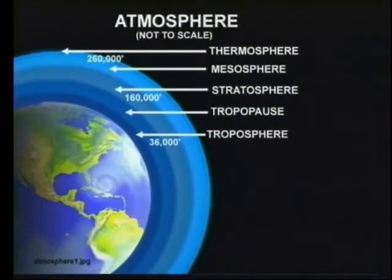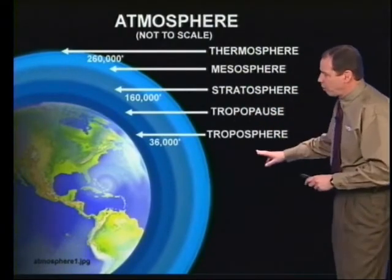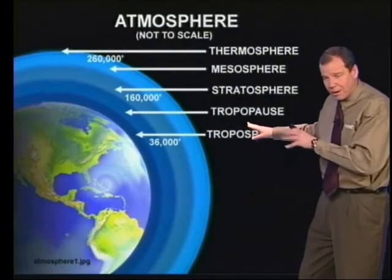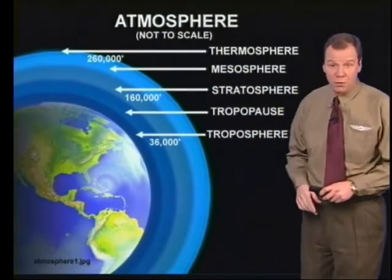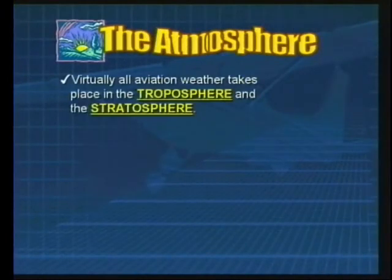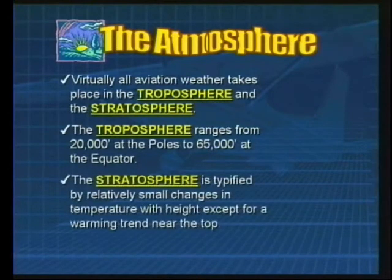Meteorologists look at the atmosphere like a layer cake. There are several different layers to the atmosphere, and they are, from the bottom up: the troposphere, the tropopause (that's the top part of the troposphere), the stratosphere, the mesosphere, and at the very top layer, the thermosphere. Virtually all aviation weather takes place in the bottom two layers — the troposphere and the stratosphere. The troposphere ranges from about 20,000 feet at its top near the north and south poles, to about 65,000 feet near the equator. The stratosphere is characterized by a relatively small change in temperature with height, except for some warming near its very top.